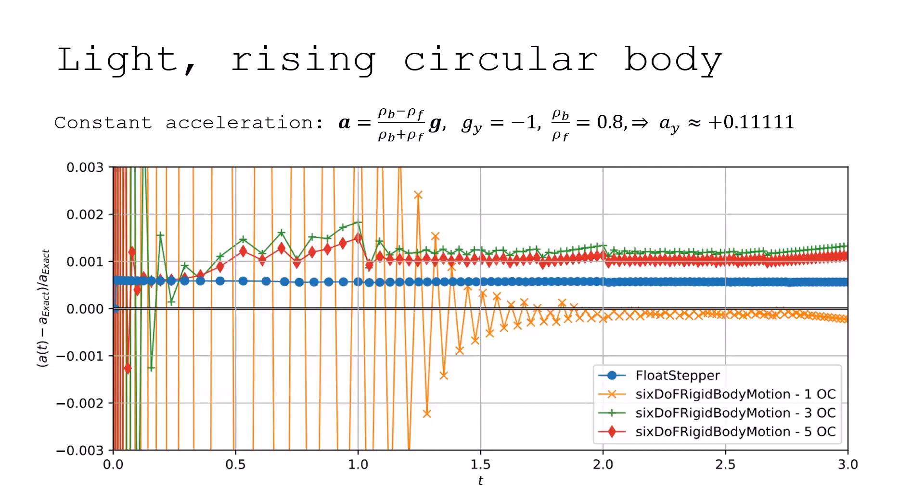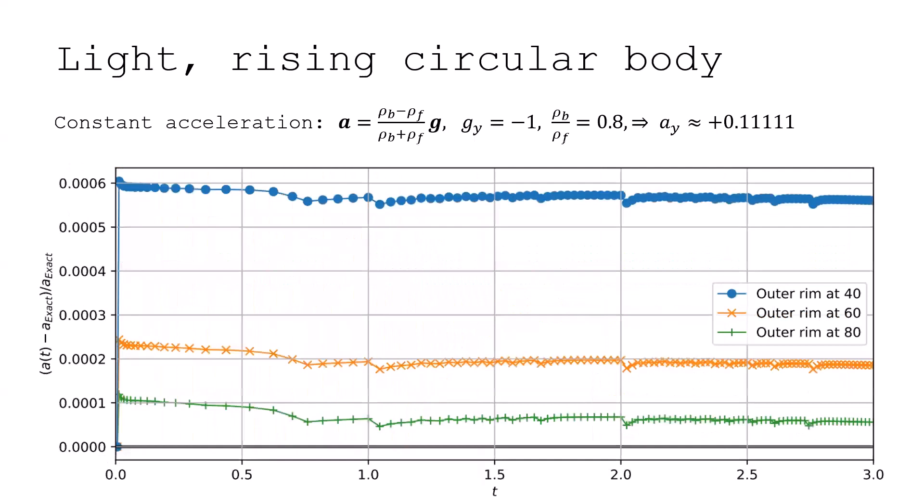Now, regarding this offset, of course, that annoyed me. So I tried to investigate various things to see what could be the cause of it. And I ended up finding that actually in my simulations, I use an outer rim. It's not an infinite domain, obviously, but I have an outer rim which is 40 radii of the circle away. If I increase that to 60 or 80, then this offset is reduced. So it's actually not, I don't think it's an error. I think it's simply a matter of the body slightly feeling that it's in a finite domain, not in an infinite domain. So this is pretty promising.